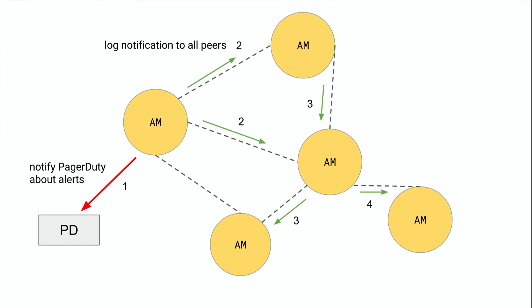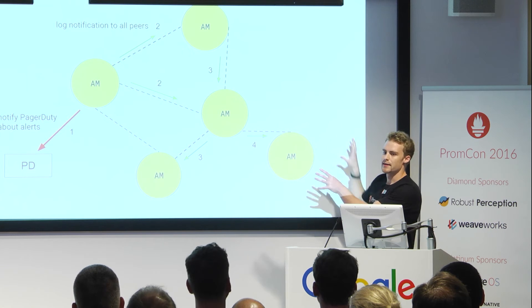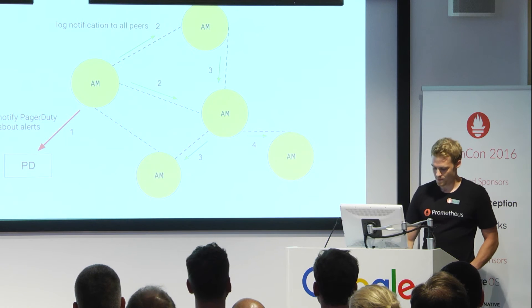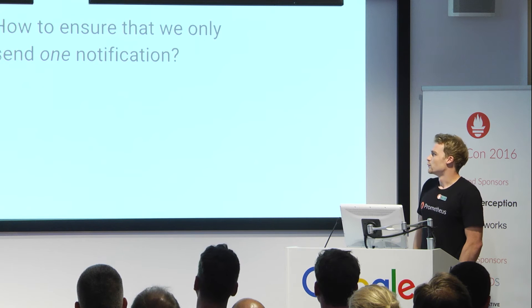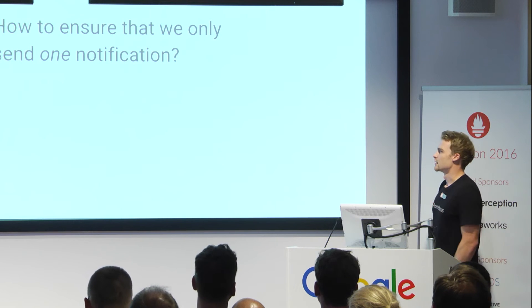So what we do is we basically log that you have notified a certain receiver about basically a set of alerts. And then we propagate some information just like silences across the entire network.